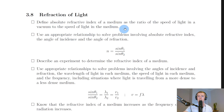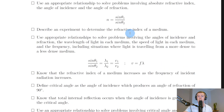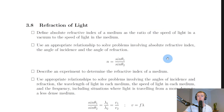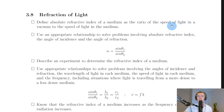For refraction of light, the first statement is to define absolute refractive index of a medium as the ratio of the speed of light in a vacuum to the speed of light in the medium. The equation is n = c/v, where c is the speed of light in a vacuum and v is the speed of light in the medium. n is our absolute refractive index.